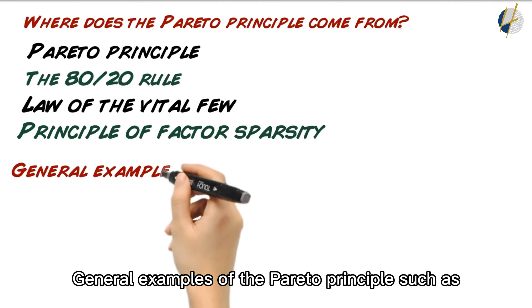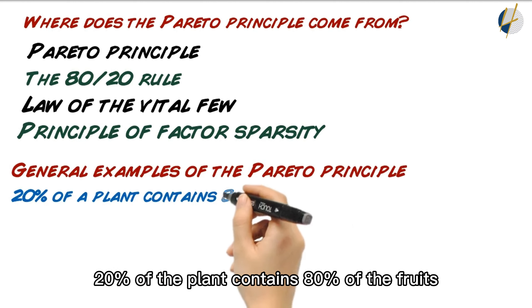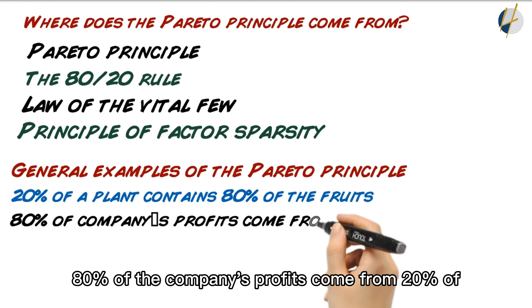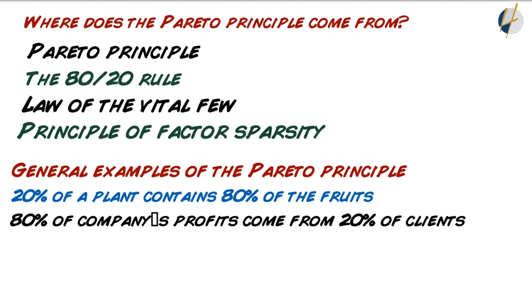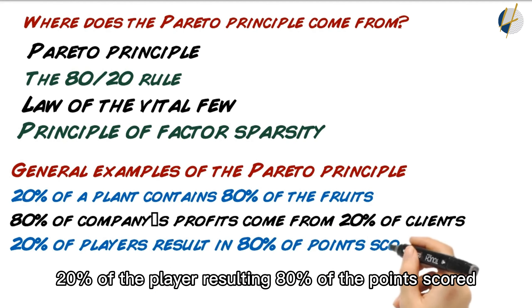General examples of the Pareto Principle, such as 20% of the plant contains 80% of the fruit, 80% of the company's profits come from 20% of the customers, 20% of the players result in 80% of the points scored.